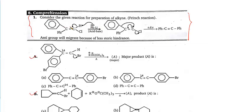Go and carefully read our reactant — it is reacting with Phly. See here: CLX is a weak base and a good leaving group, so it will leave, and the group exactly opposite to it will migrate onto this carbon. This is because it is clearly written that the anti group will migrate due to less steric hindrance.